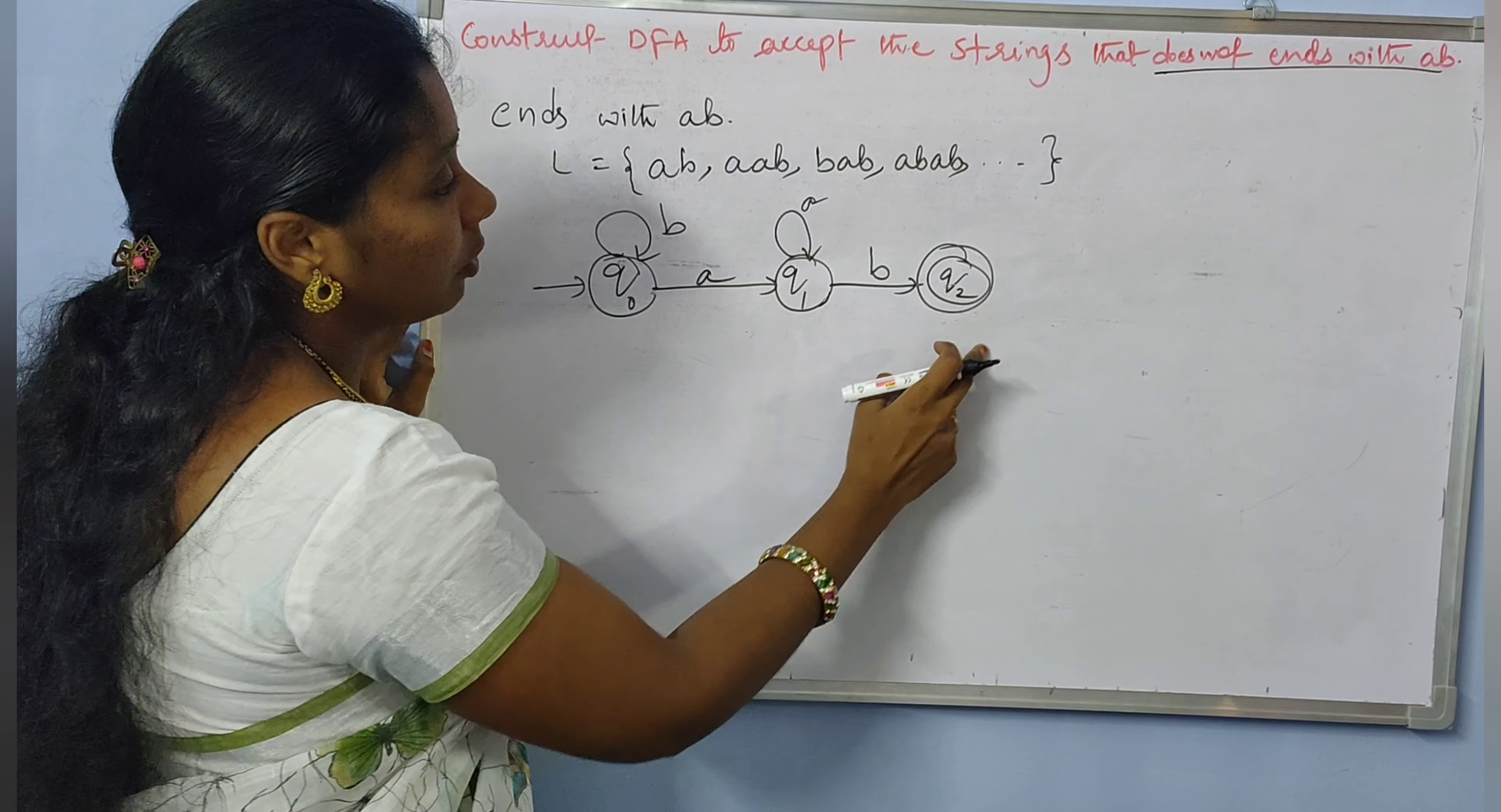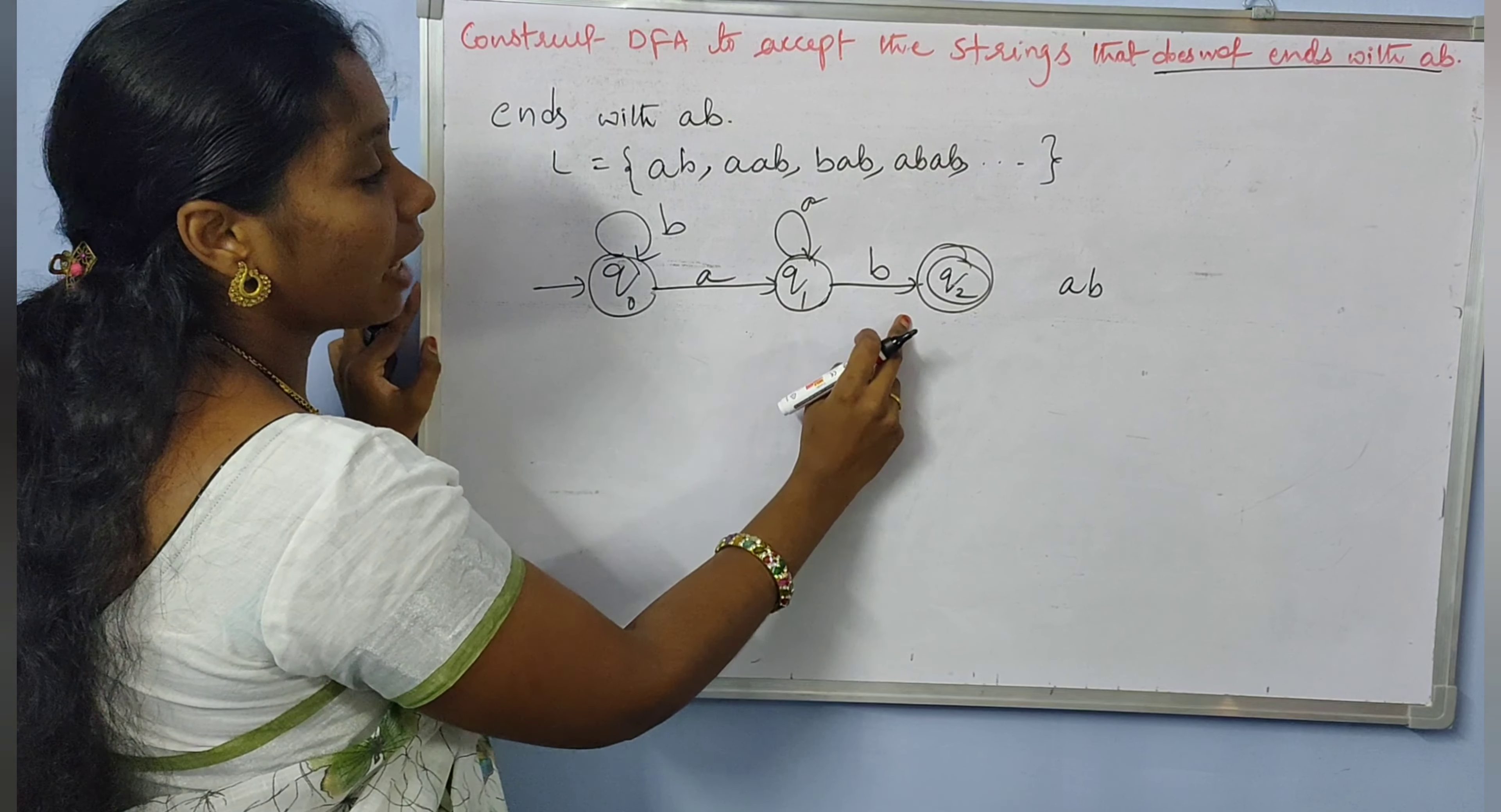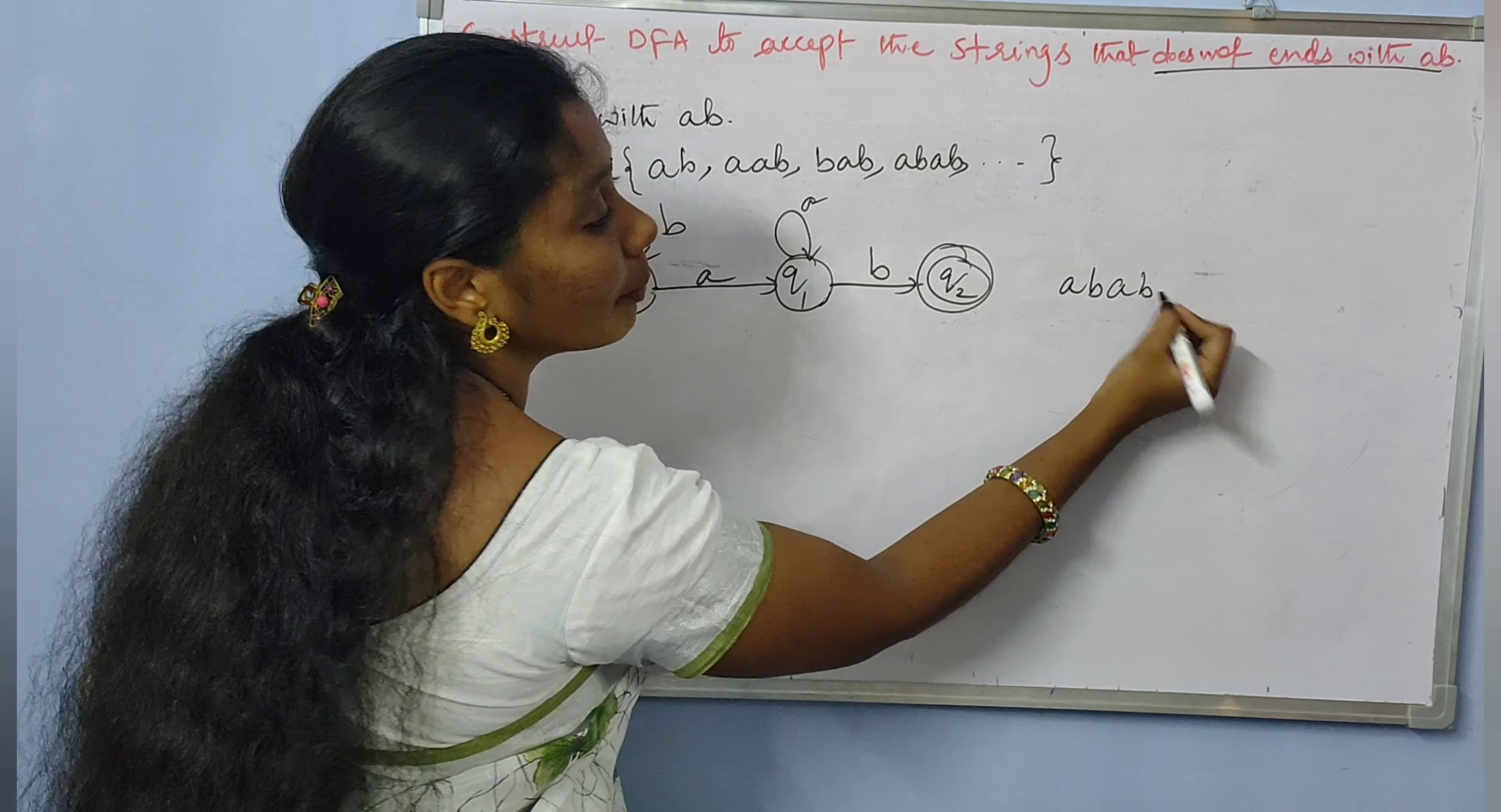Coming to Q2, from Q1 with B we reach Q2. At Q2 we already have string AB. If we get A, it needs another B to end with AB again.